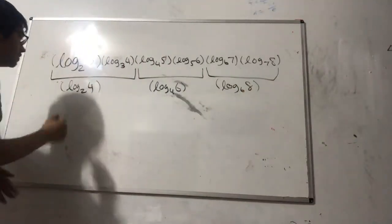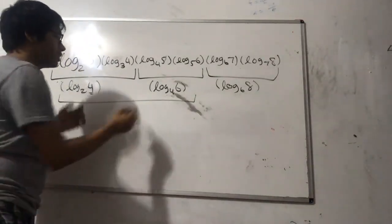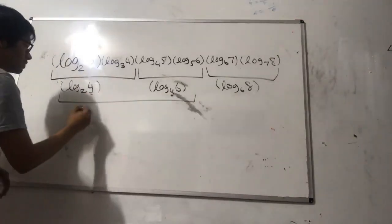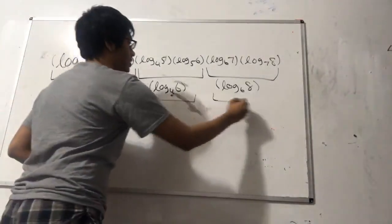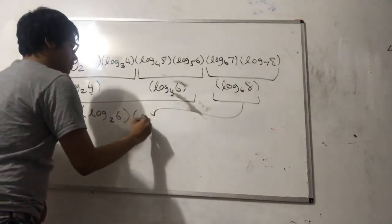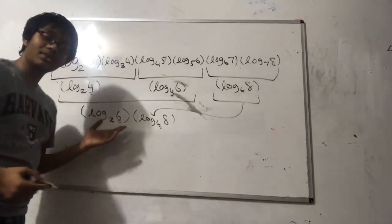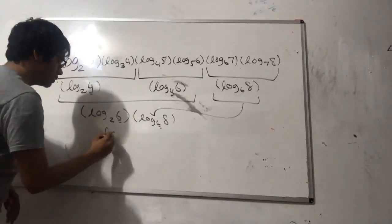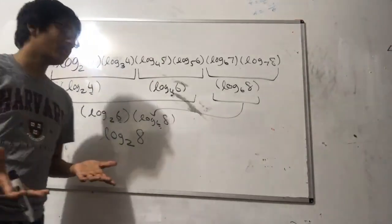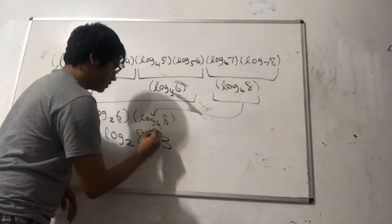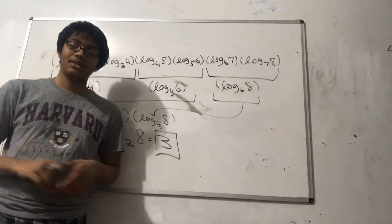Now we multiply all of these results together: log base 2 of 4 times log base 4 of 6, by the chain rule, equals log base 2 of 6. Then log base 2 of 6 times log base 6 of 8 equals log base 2 of 8. And what seemed like a very strange problem actually has a very neat answer — log base 2 of 8 is just 3. Thanks for watching, I'll see you next time with a better problem!